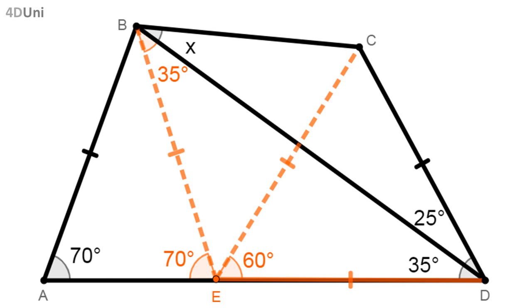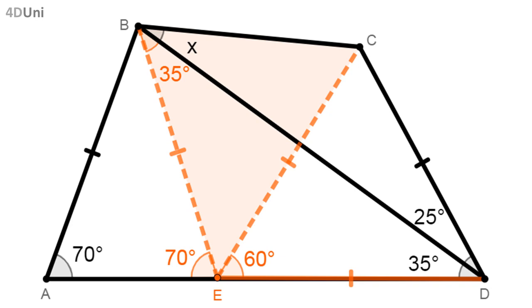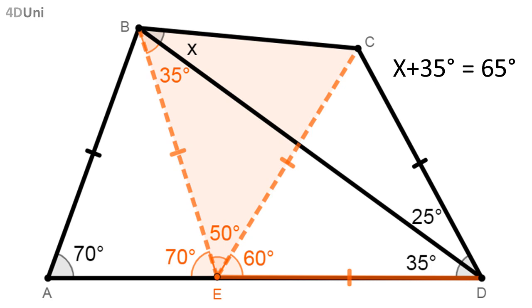Have we made any progress? Yes — we have obtained the isosceles triangle BEC. Since x is part of one of its internal angles, we focus on that triangle. It would be convenient to know the internal angle at E. Looking at the line containing that point, 70 degrees plus 60 degrees equals 130 degrees, so to complete 180 degrees, the measure of angle BEC should be 50 degrees. In that triangle, angle BEC is 50 degrees, so the other two angles should add up to 130 degrees. Since they are both equal because triangle BEC is isosceles, each is equal to 65 degrees.